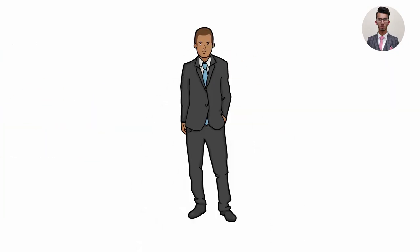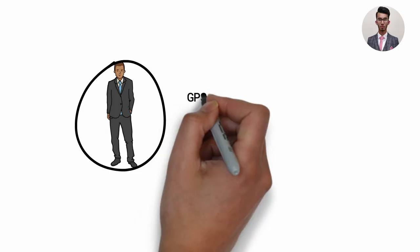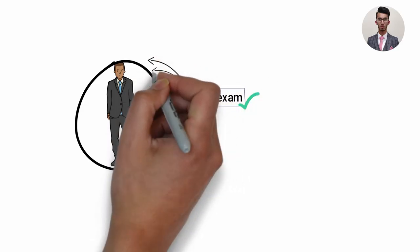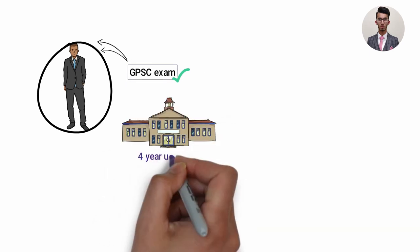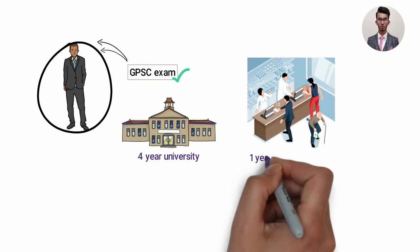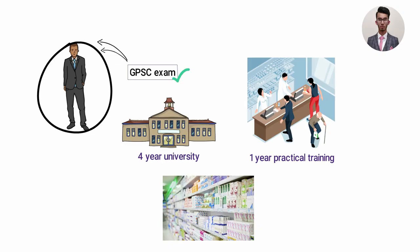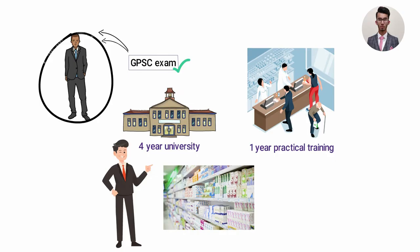Then we have the pre-reg pharmacists, who are basically graduate pharmacists preparing for the GPhC exam, passing which will allow them to become fully qualified pharmacists. The pharmacy degree is four years at university and then you have one year of practical training called the pre-reg year, although there are rumors that it will be revamped and called the foundation year in the near future.